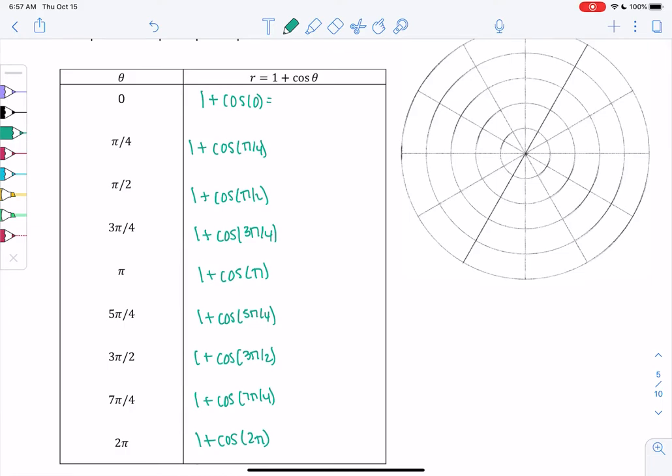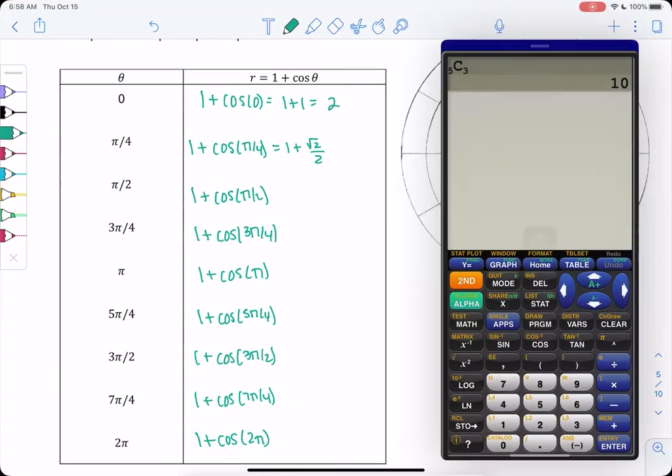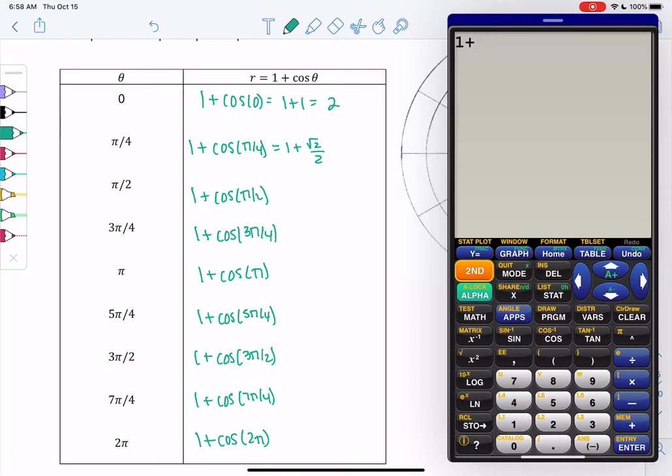So you're back because you already finished this. Cosine of 0 is 1, so we get 1 plus 1 or 2. Next we have cosine of pi over 4, which is 1 plus root 2 over 2. And then because we're going to graph, we'll estimate these just so we can get an estimate of where it's at. Normally I wouldn't do this, but we want to know, is it 2, is it 3, right? Where exactly is it? So it's about 1.7. That tells us it'll be in between 1 and 2. So that'll help us with graphing.